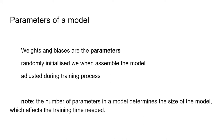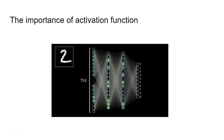The weights and biases are called the parameters of the model. They are randomly initialized when we put the model together and adjusted during training. The number of parameters in a model determines the size of the model, which affects training time — because in every iteration we have to adjust all the parameters, so if there are more parameters it takes more time to adjust them.